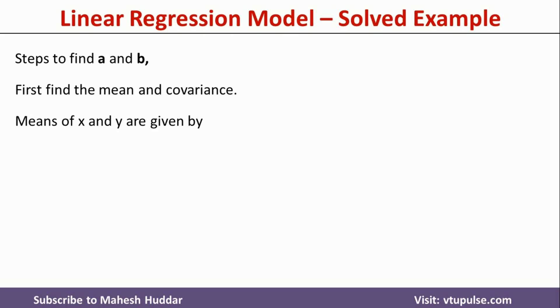First, we will try to find the means of x and y, where x is the independent variable and y is the dependent variable. The mean of x, that is x-bar, is equivalent to the summation of x divided by n, where n is the number of instances or data points. Similarly, y-bar, that is the mean of y, is equivalent to the summation of y divided by n.